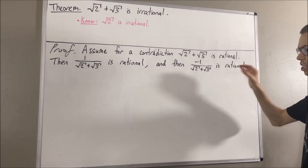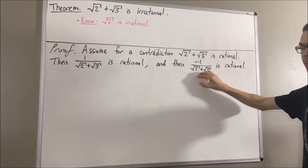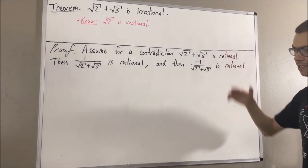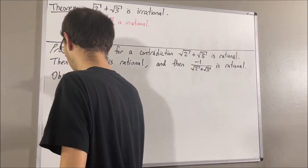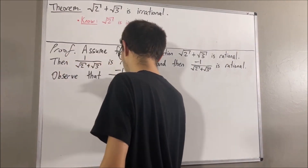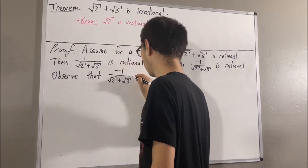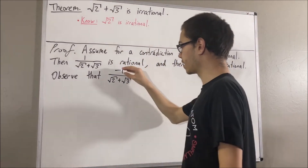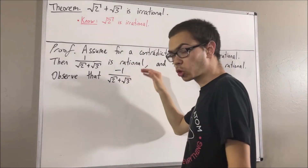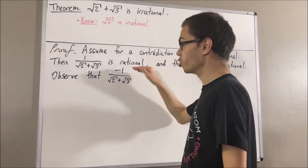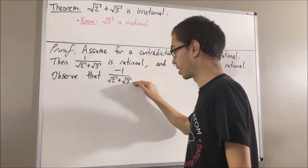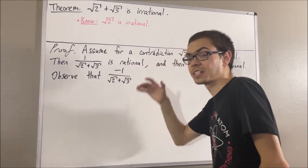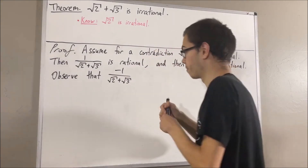But now, let's convert this into an equivalent expression. What we're going to do is multiply both the numerator and denominator by (square root of 2 minus square root of 3).